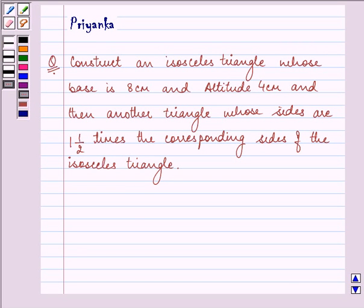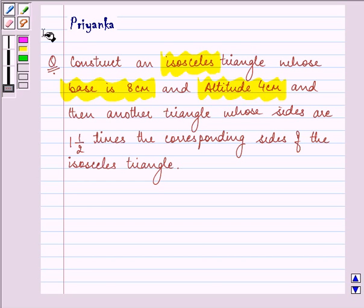Hello friends, how are you all doing today? The question says construct an isosceles triangle whose base is 8 cm and altitude 4 cm and then another triangle whose sides are 1.5 times the corresponding sides of the isosceles triangle.